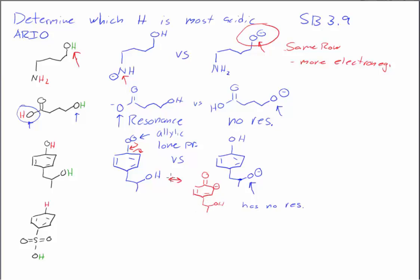And we can draw several more resonance structures. So there's two more resonance structures that are possible in this case. And so the red hydrogen is going to be more acidic because its conjugate base is stabilized by resonance, whereas the conjugate base of the green hydrogen is not stabilized by resonance.